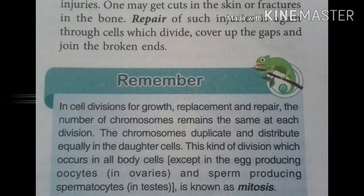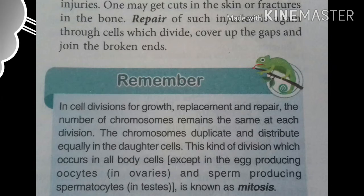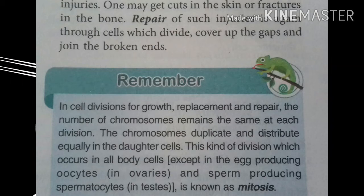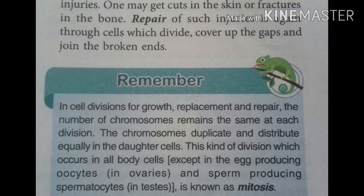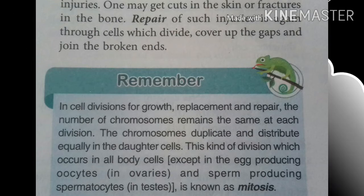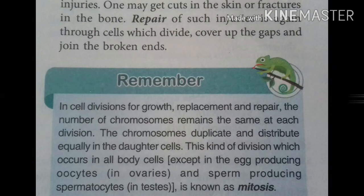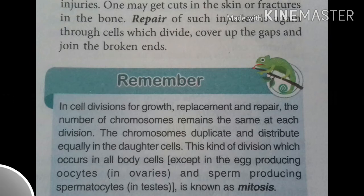In cell division for growth, replacement and repair, the number of chromosomes remains the same at each division. So the new cell has the same chromosome number as the first cell. For example, in human beings, all body cells — somatic cells like cells of hand and leg — have 23 pairs of chromosomes in each cell. The chromosomes duplicate and distribute equally in the daughter cells. This kind of division, which occurs in body cells except in the egg-producing oocyte in ovaries and sperm-producing spermatocyte in testes, is known as mitosis.